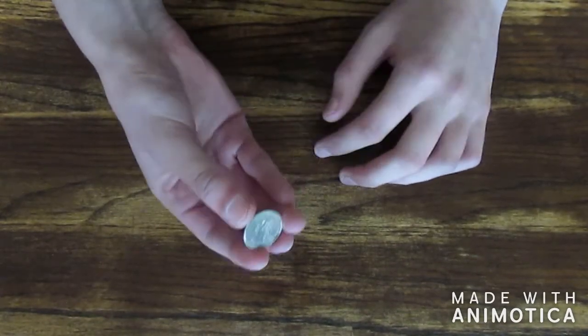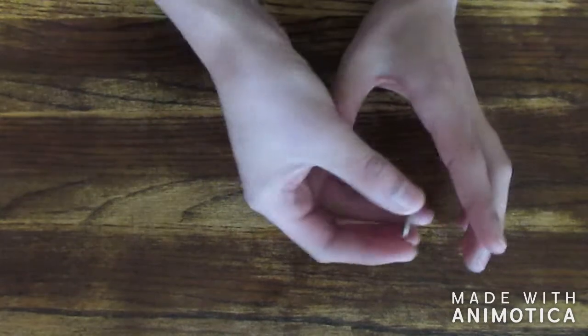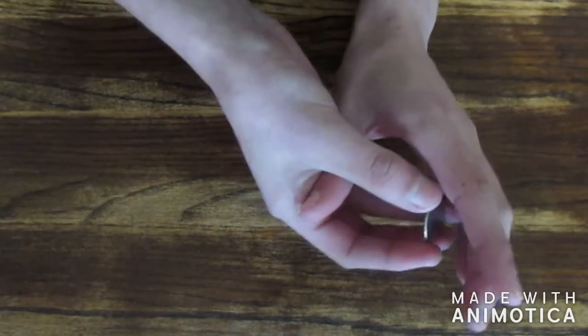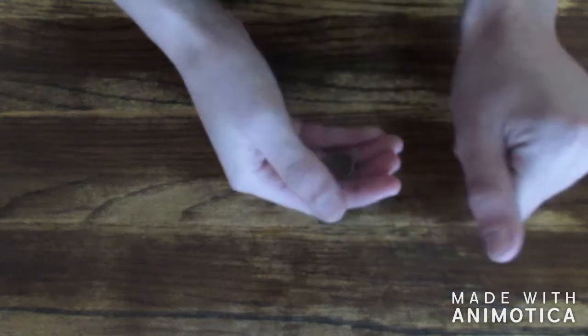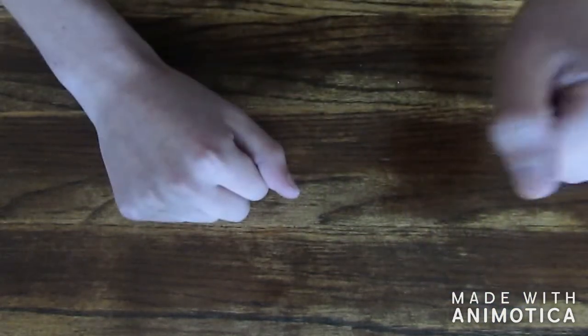Now basically what's happening is, this is from an exposed angle. You're coming through and you're dropping the coin but it looks like you're grabbing it. And then you're kind of just turning your wrist over here like this, but it's actually in this hand but it looks like it disappeared.